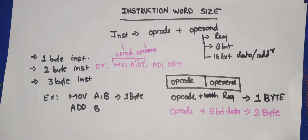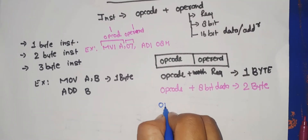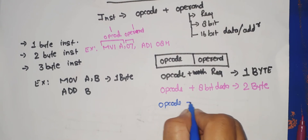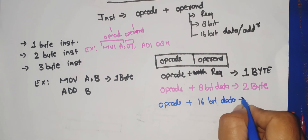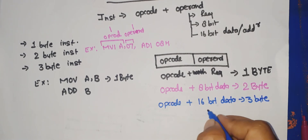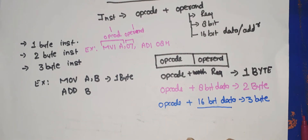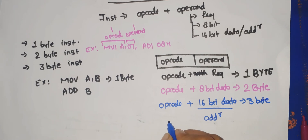If your instruction is opcode plus 16-bit data, then it is a three-byte instruction. This 16-bit data can be a data value or a 16-bit address. So opcode plus 16-bit data or 16-bit address is a three-byte instruction: one byte for the opcode and two bytes for the 16-bit data.